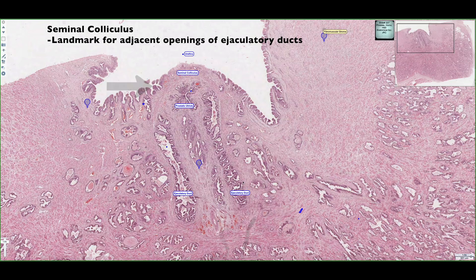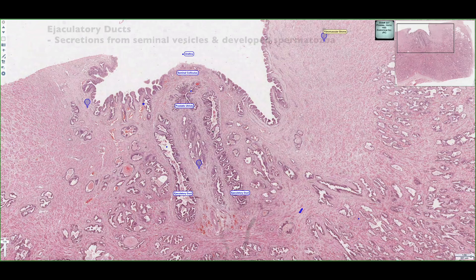Similarly, on the right side we have the ejaculatory duct, which is going to open up on the right side. The ejaculatory ducts are going to carry the secretions from the seminal vesicles as well as the developed spermatozoa coming from the ductus deferens.